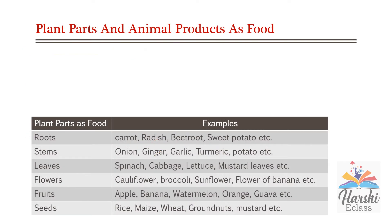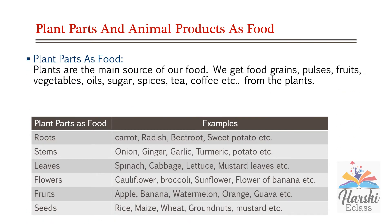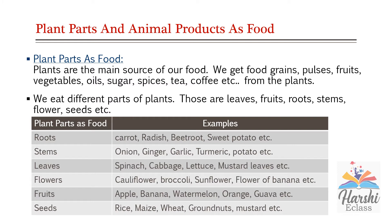Plant parts and animal products as food — in previous classes you already learnt about the parts of a plant. In a plant there are leaves, fruits, stems, flowers, seeds, etc. Plants are the main source of our food. We get food grains, pulses, fruits, vegetables, oil, sugar, spices, tea, coffee, etc., from different parts of plants. Let's see some examples of plant parts used as food.